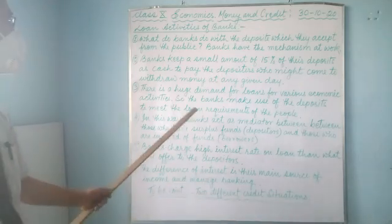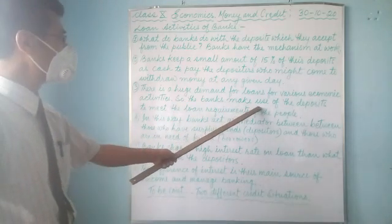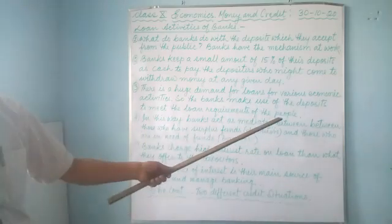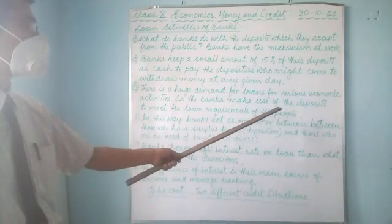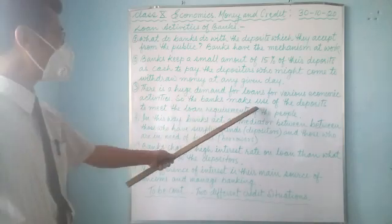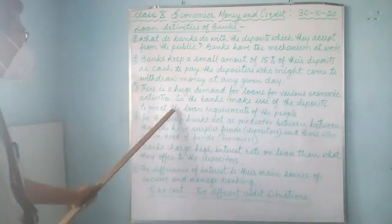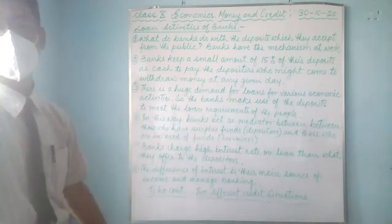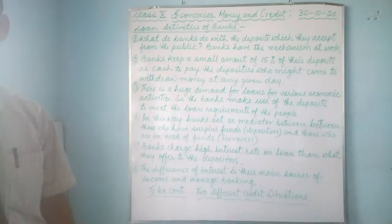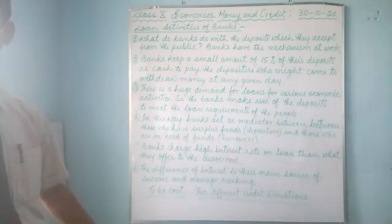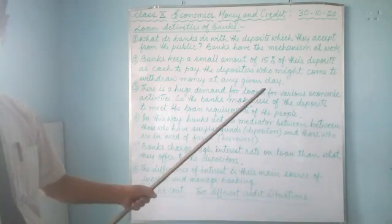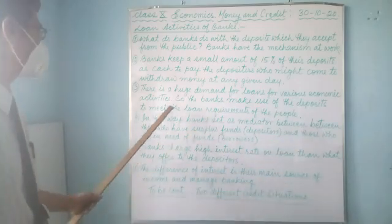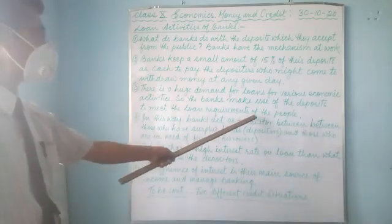The banks make use of the deposits — that remaining 85% — to meet the loan requirements of the people who come to the bank for a loan. So the bank will provide the loan to those people who want a loan from that remaining 85%.